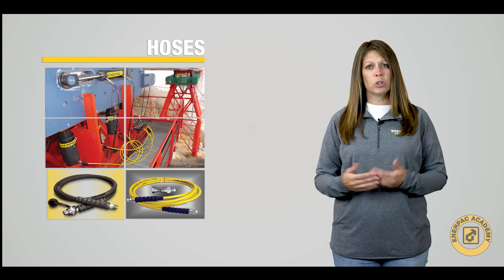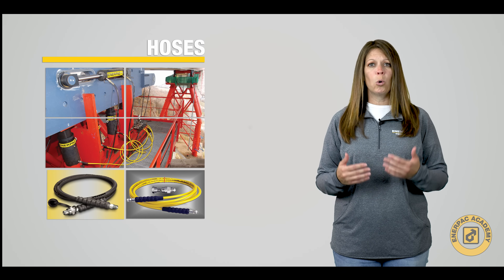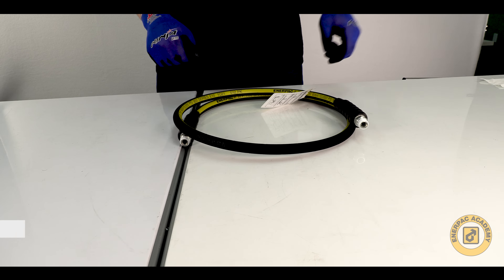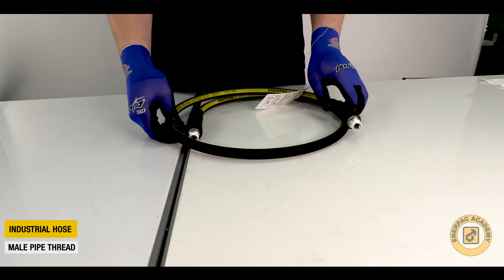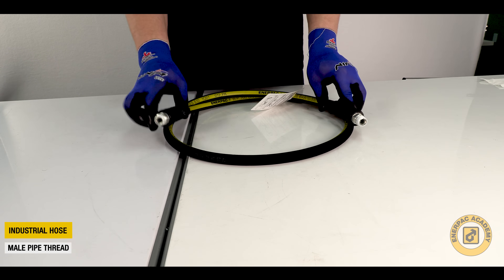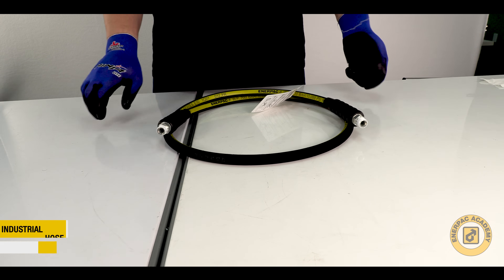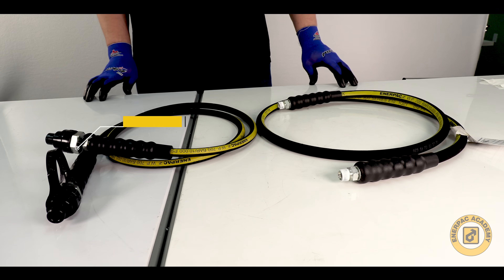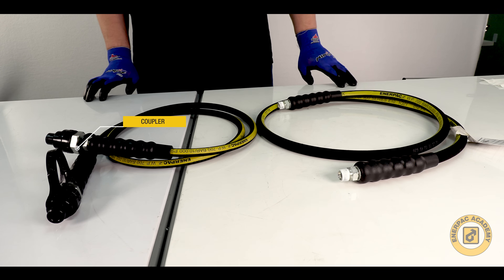The final term to understand is the hose end or end assembly. Most industrial hoses feature male pipe threads on each end. These threads are usually one-quarter inch or three-eighths inch NPTF threads. To simplify ordering, many hoses can be ordered with an installed coupler on one or both ends.